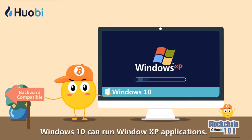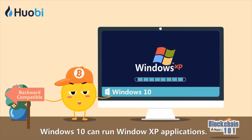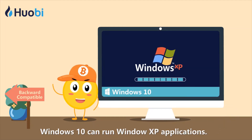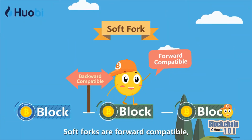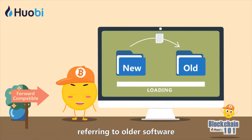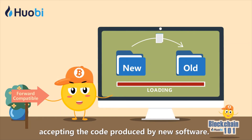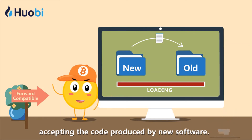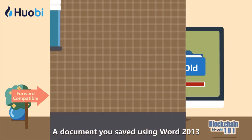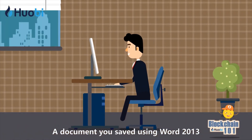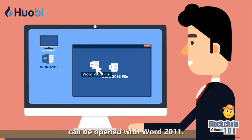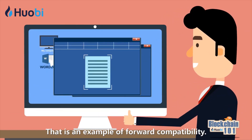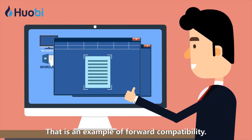For example, Windows 10 can run Windows XP applications. Soft forks are forward compatible, referring to older software accepting the code produced by new software. A document you saved using Word 2013 can be opened with Word 2011 — that is an example of forward compatibility.